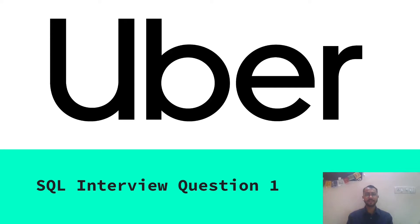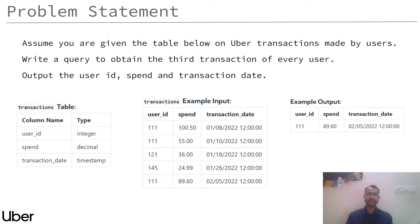Hi everyone. In this video we will be discussing one SQL interview question that was asked in the Uber interview. Let's get started and try to understand the problem first. This is a very simple problem statement where you have to get the third transaction made by every user. Let's have a look at the format of the table.